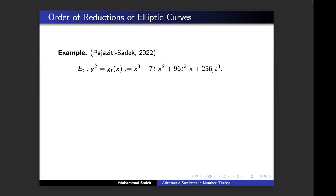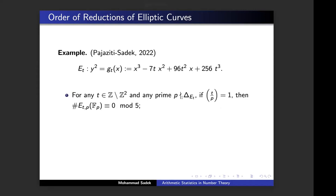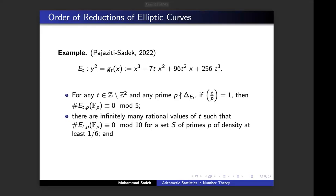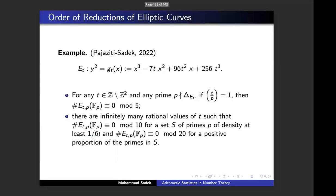What we managed to show is: as long as t is a square modulo p (in terms of the Legendre symbol), the order of the reduction of this elliptic curve modulo p must be congruent to 0 modulo 5. Not only this: there are infinitely many rational values of t such that the order of the reduction is divisible by 10, and this proportion of primes is at least 1/6. We can dig deeper: in fact a positive proportion of primes satisfies the condition that the order of the reduction is divisible by 20 — and 20 was not in Mazur's list.